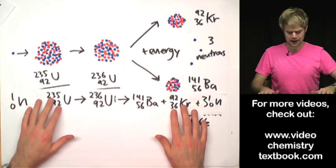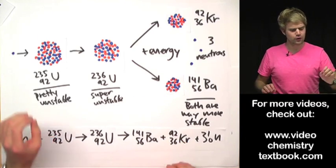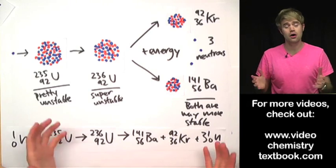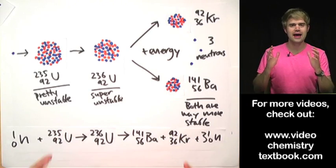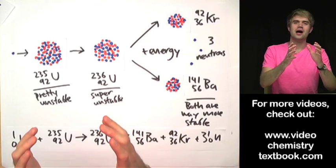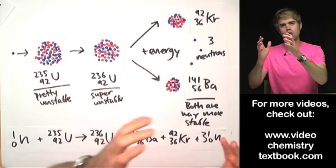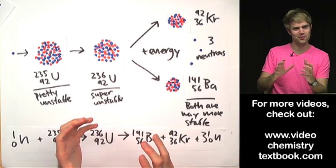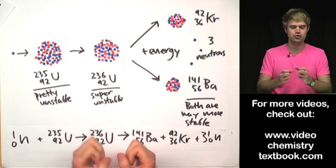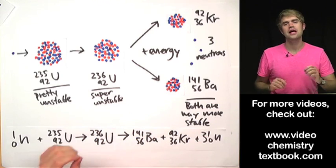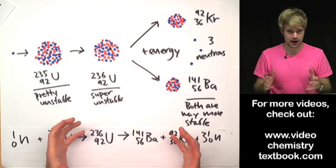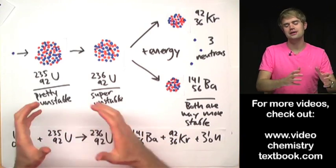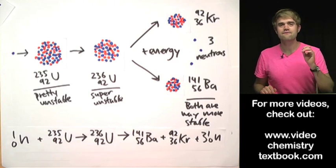Now a lot of times people wonder if uranium is the only element that's so unhappy that it can split, and no, it's not. Actually most elements with atomic numbers from 90 to 100 are unstable enough that you can provoke them in one way or another, maybe by adding a couple of neutrons, and that will make them split. If something can split, we call it fissile. So most of the atoms with atomic numbers from 90 to 100 are what we call fissile.